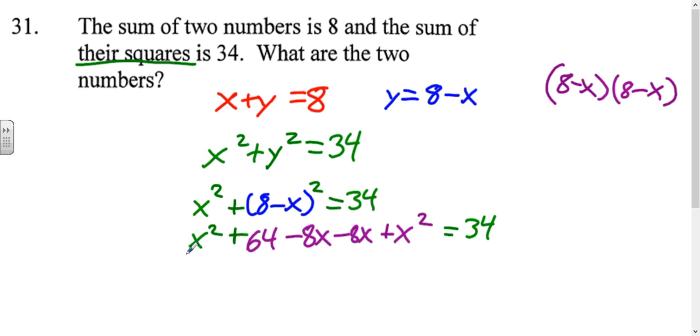So we want to combine all of our like terms. We'll combine our x squareds, that's 2x squared. Combine our x's: negative 8, negative 8, that's negative 16x. And we will subtract the 34 over because we want it to be equal to 0. And combine those: 64 minus 34 is 30. And now that's equal to 0.